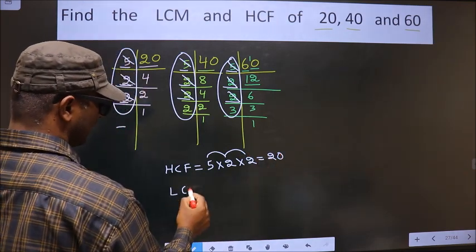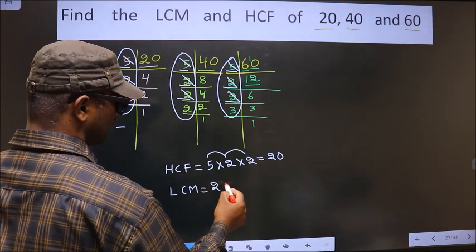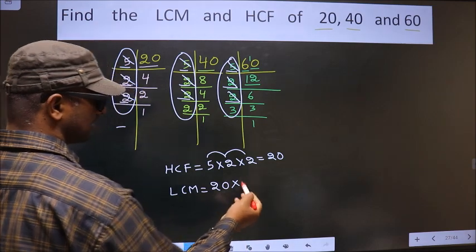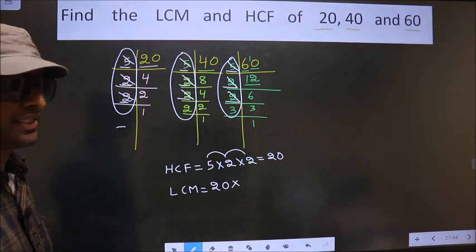So now to get the LCM, we take the number we got as HCF and multiply it by certain numbers. How do we decide those numbers? See.